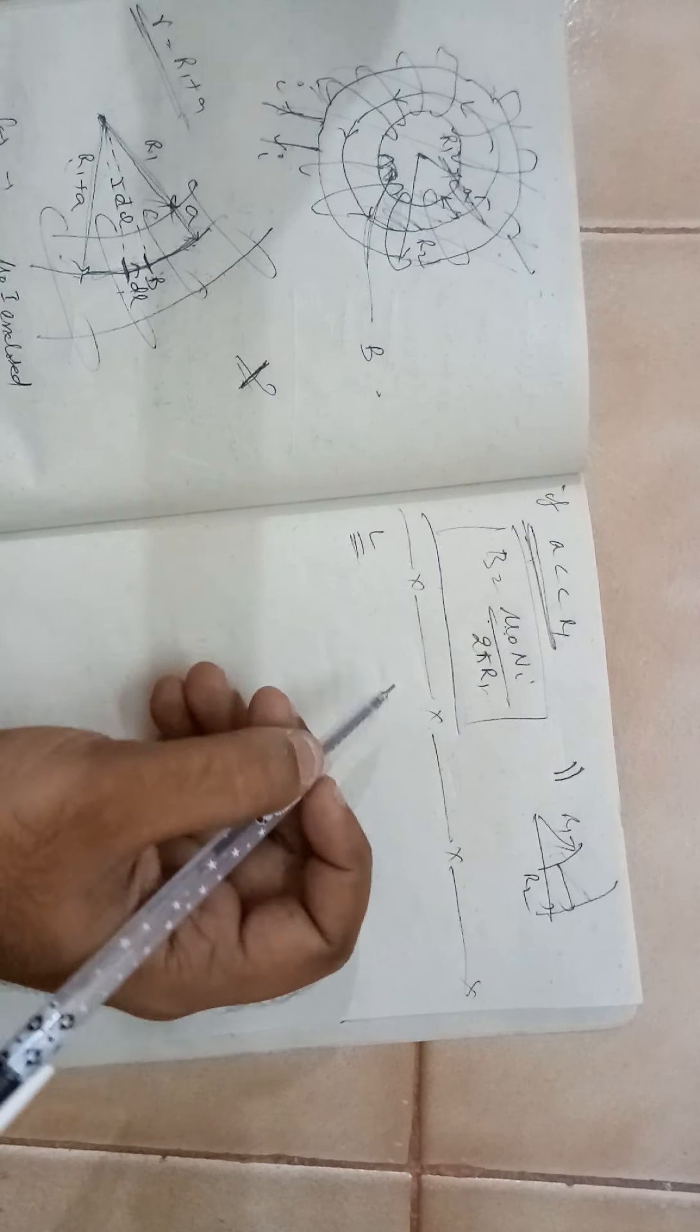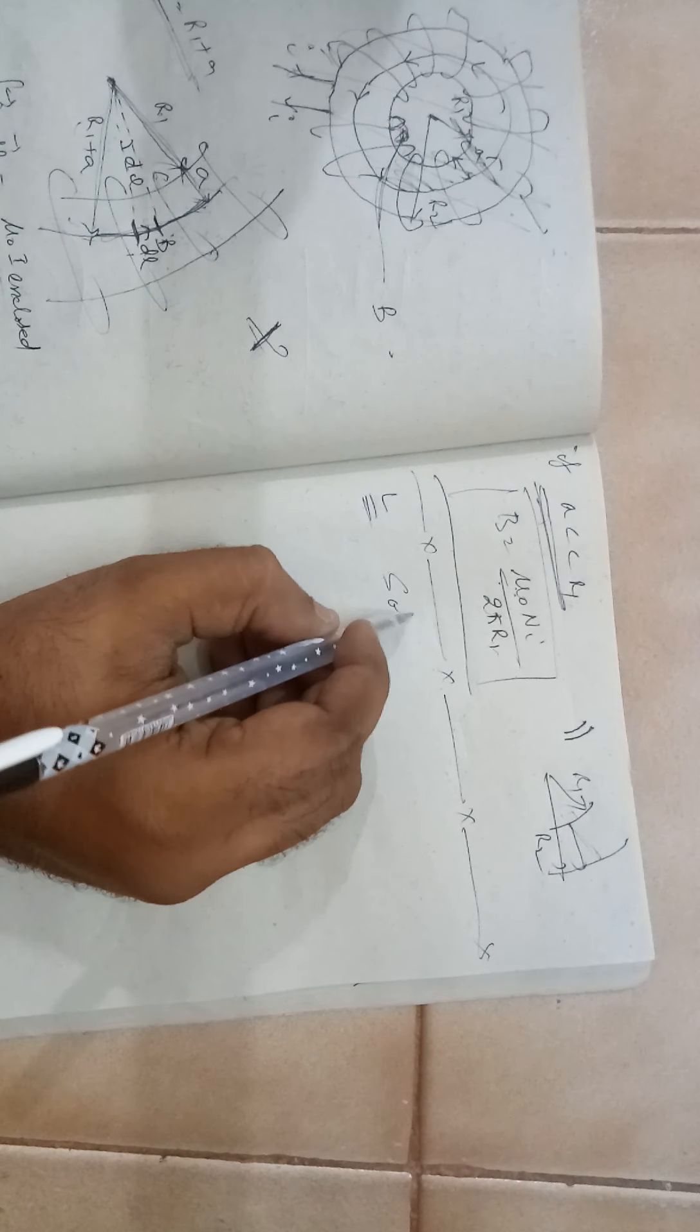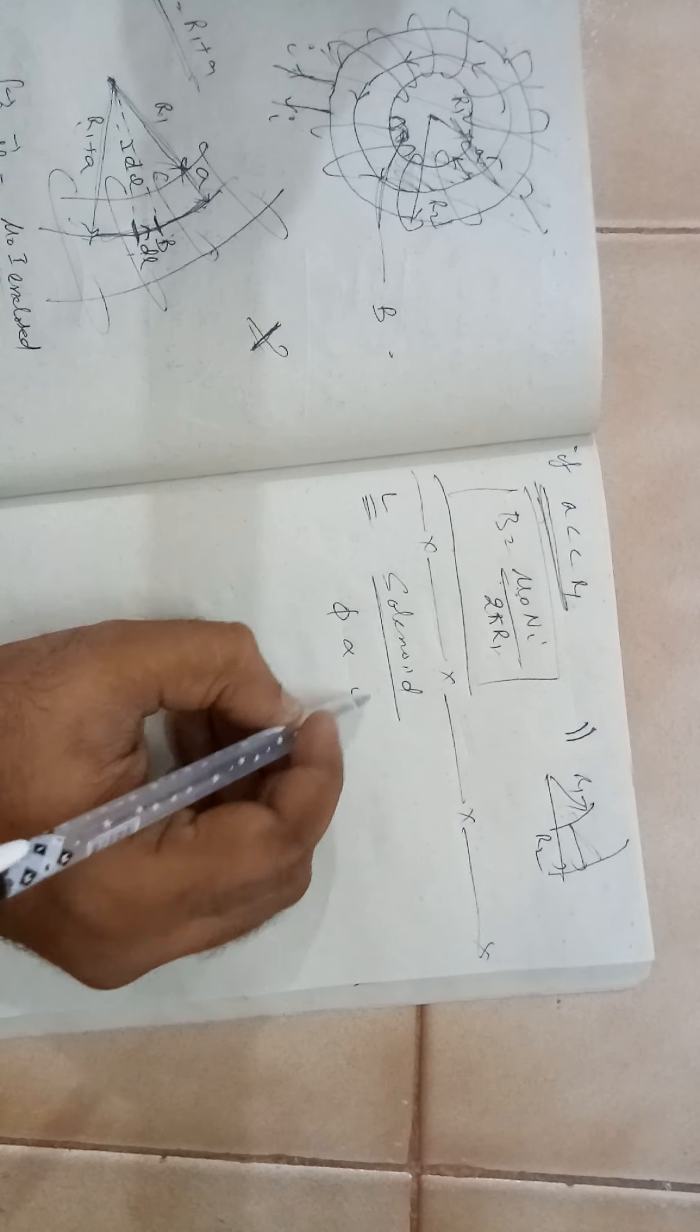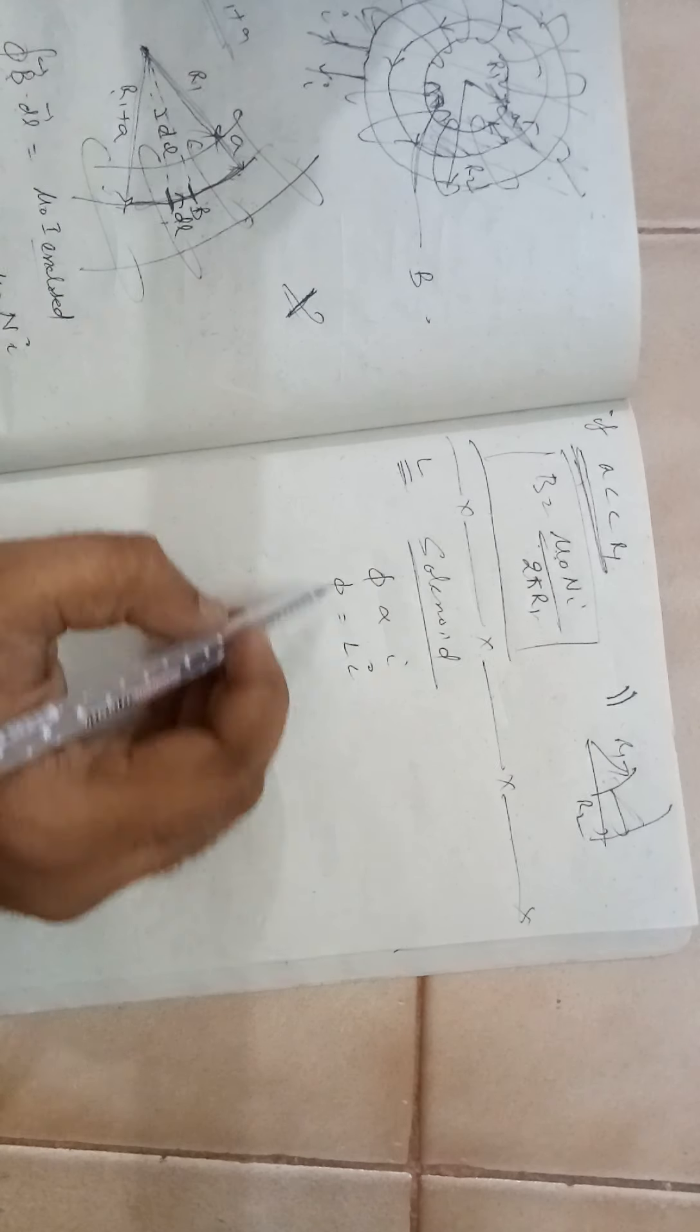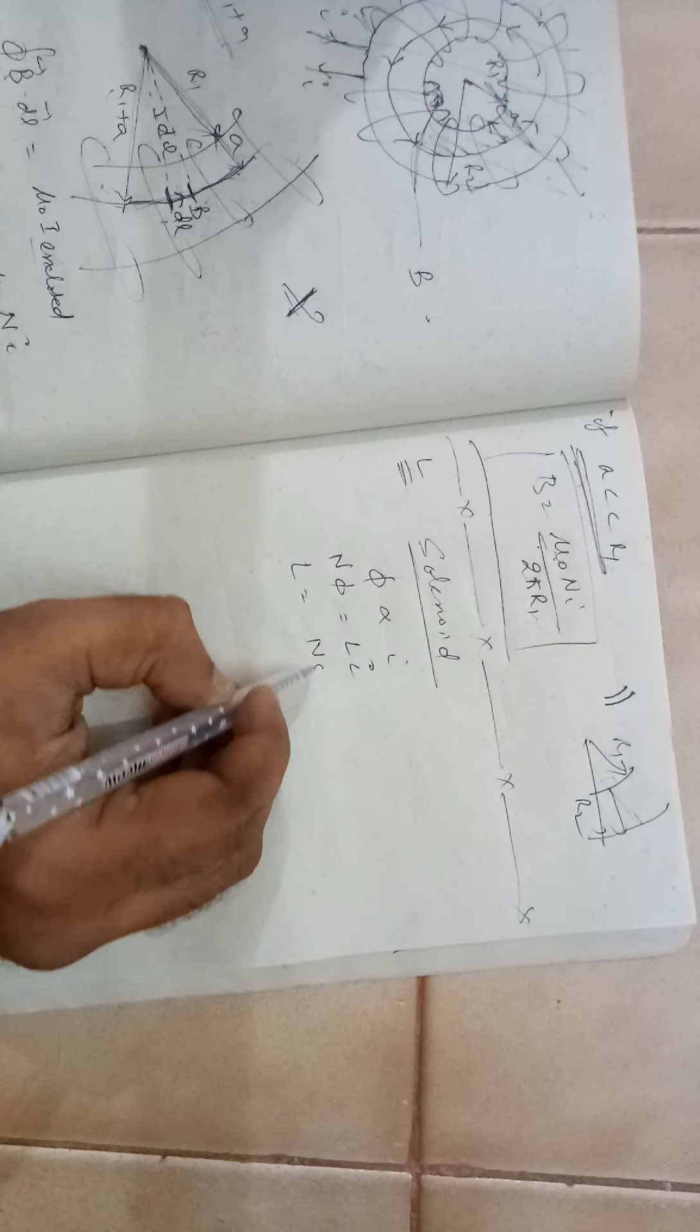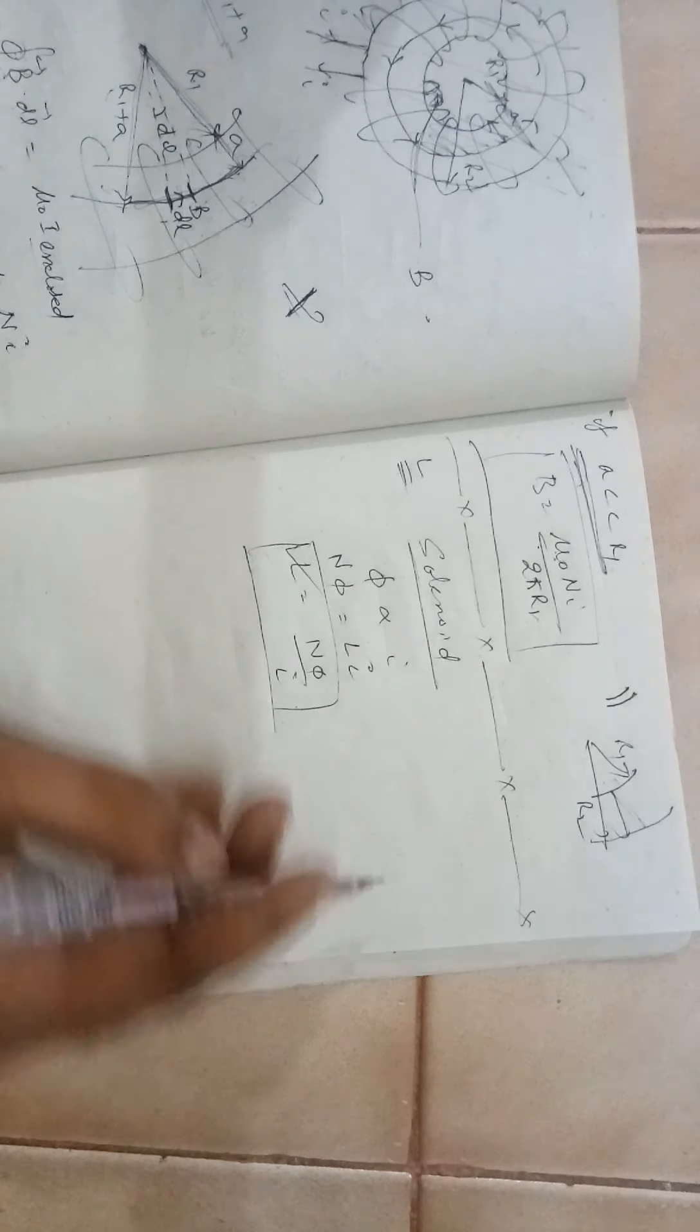Basically, earlier when we were dealing with the case of a solenoid, we have observed that phi is proportional to I, and therefore phi is equal to some constant into I, L I. If there are N turns, it will be N phi. So L will be N phi by I. This is one way of finding out L.